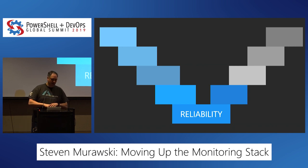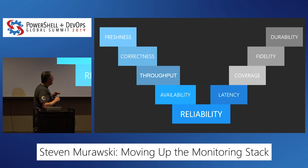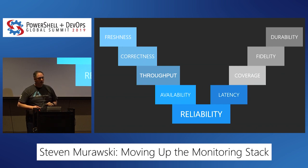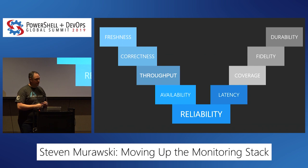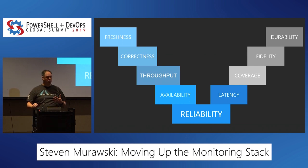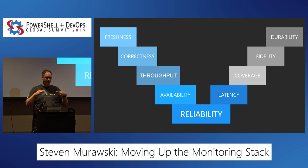We have a number of components that come into how we measure reliability. There are some you may have already thought of, like throughput and latency — you want to know how quickly requests are being resolved. You want to know about fidelity: are transactions coming through properly? Are they getting stored properly in the database? Am I getting current information or is it cached? Together, all of these different types of evaluations play into the reliability of our systems.